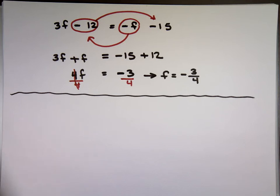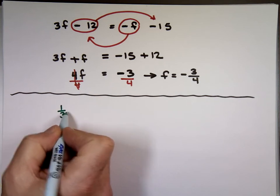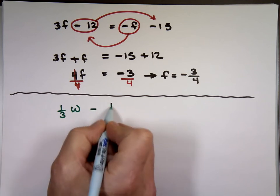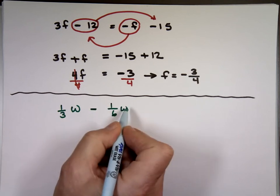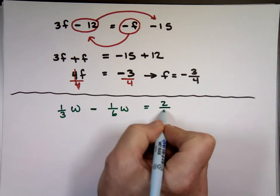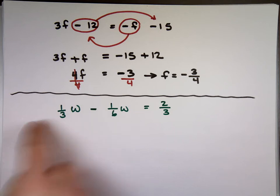Let's put 1 with fractions, since we all like fractions. 1 third W minus 1 sixth W equals 2 thirds. Now I know a lot of you are not a fan of fractions. I don't think there's that many people who like fractions. So you can actually get rid of all the fractions. How? Most common denominator. Which is what?